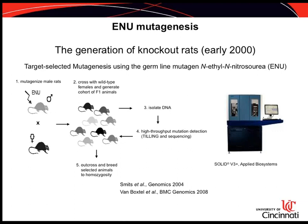The technique is pretty straightforward. We inject ENU — N-ethyl-N-nitrosourea — into male rats via IP injection, normally two or three times with a week between each injection. We then wait a full round of spermatogenesis so point mutations can be incorporated into the sperm. These male rats are bred with wild-type females to generate a cohort of F1 animals, we isolate DNA from those F1 animals, and using a TILLING or sequencing strategy we look for mutations induced in genes of interest.